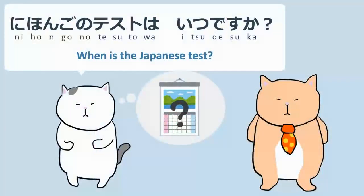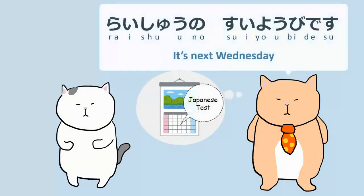When is the Japanese test? 日本語のテストはいつですか? It's next Wednesday. 来週の水曜日です。